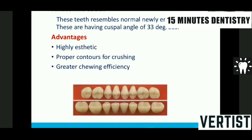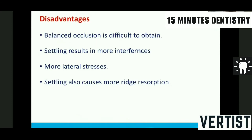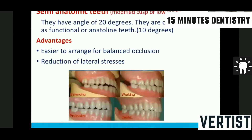Anatomic teeth exactly replicate the newly formed teeth and they are at 33 degrees inclination. They are highly aesthetic with proper contours for crushing and greater chewing efficiency. However, they come with a disadvantage that it is difficult to achieve balancing. They are also responsible for interferences during settling in — the period when the denture adjusts to soft tissues and changes position — leading to more lateral stresses and resorption at the alveolar ridge.